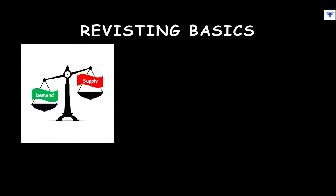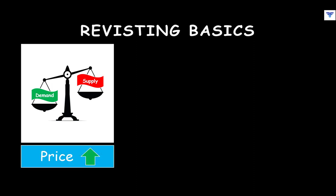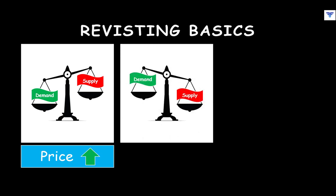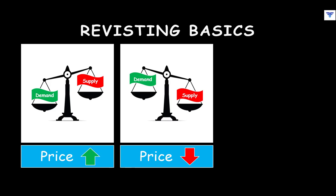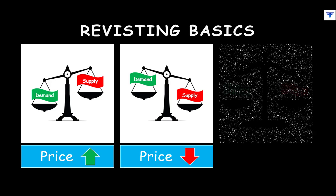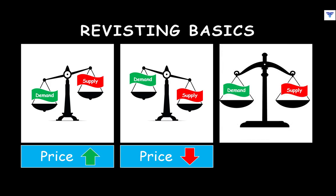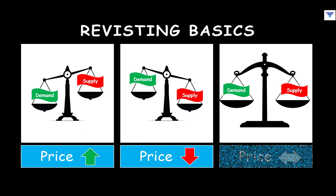Keep in mind that when buyers are more aggressive than sellers, the price will tend to rise. When sellers are more aggressive than buyers, the price will tend to decline. And when buyers and sellers are in equilibrium, price will tend to move in a sideways fashion.